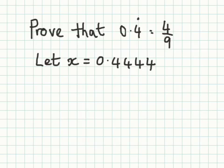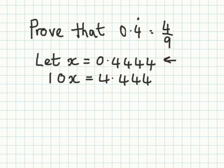We can see we have one number after the decimal point which is recurring, so we then write 10x. And if we multiply this decimal here by 10 we get 4.444 and so on.